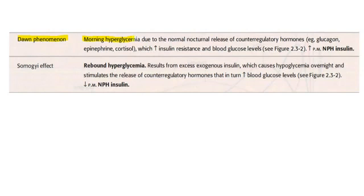There is a morning hyperglycemia due to nocturnal nighttime release of counter-regulatory hormones — glucagon, epinephrine, cortisol — which increase insulin resistance and blood glucose levels.